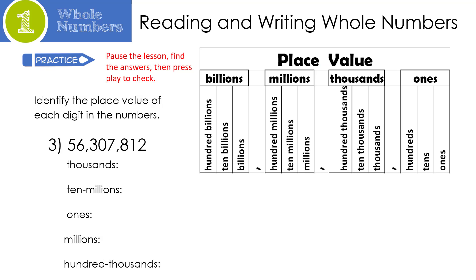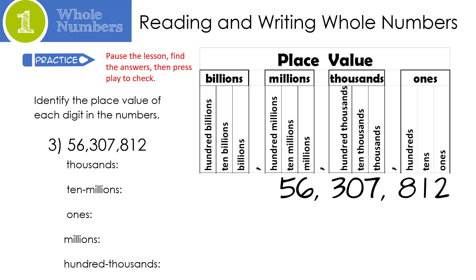This one is for you to practice. So you're going to pause the lesson, find the numbers, then press play to check. All right, let's see how you did. I like to write my numbers in the place value chart. The number in the thousands place is seven. The number in the ten millions place is five. The number in the ones place is two. The number in the millions place is six. And finally, the number in the hundred thousands place is three. How'd you do?